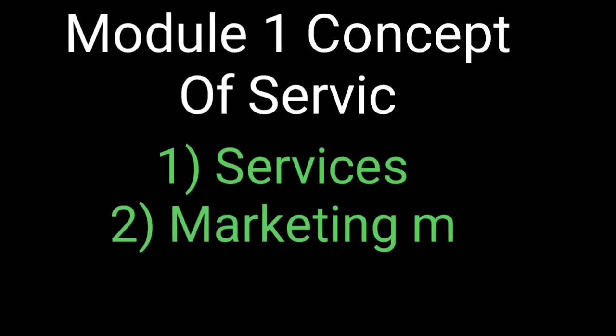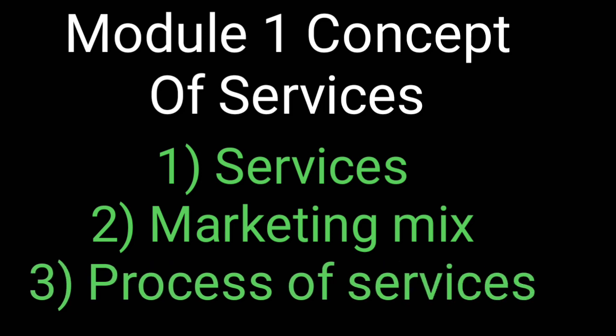Commerce Paper 2 has 4 modules overall. Module 1 is the Concept of Services. There are 3 questions in this module: one question is on services, one on marketing mix, and one on service strategies. The services question could be: define services, explain the features, define services explain the scope, types of services, importance of services — such questions can be asked. Marketing mix and the process of services are also important questions that repeat every year.